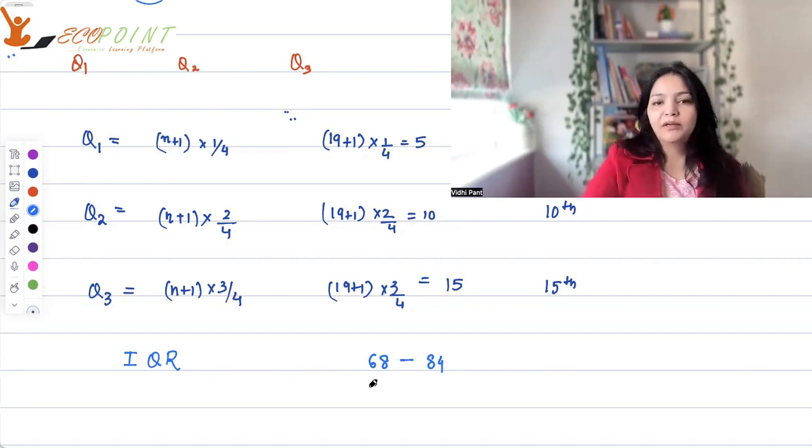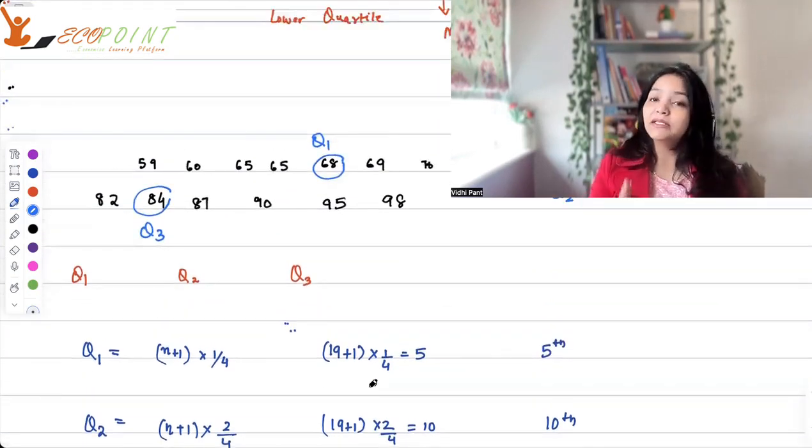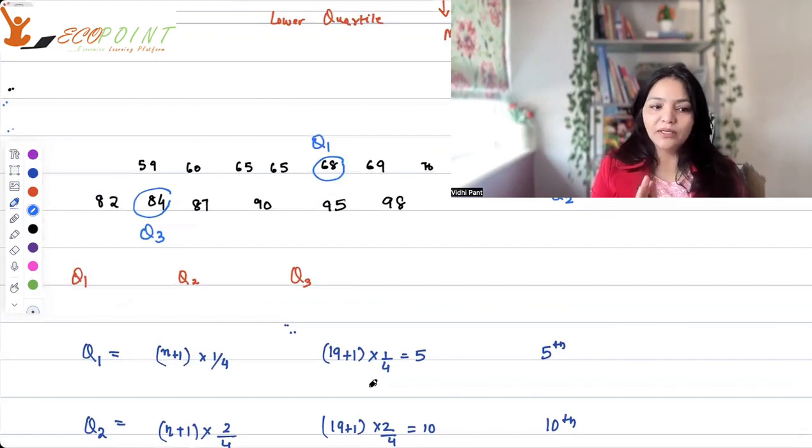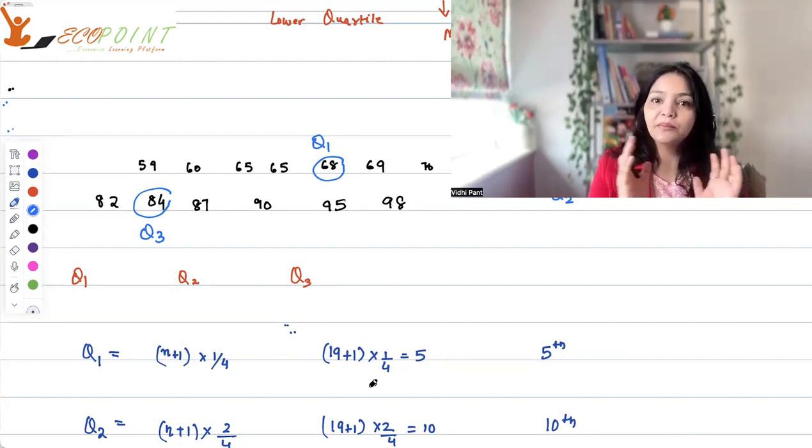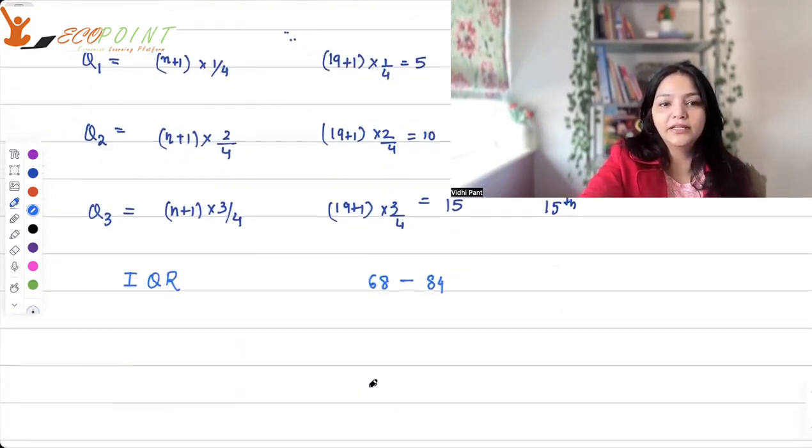So, the range is 68 to 84 and that gives you a decent idea of the spread of values around median. The median, the middle value is 75. But if we look at the values, 25% left, 25% right, if we go to 68 to 84 values are going. That's the picture of variability that you get from interquartile range.